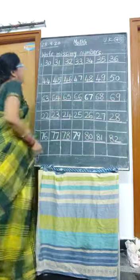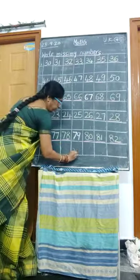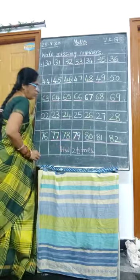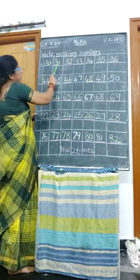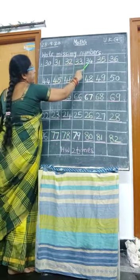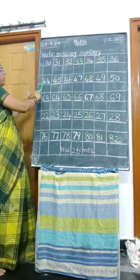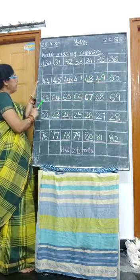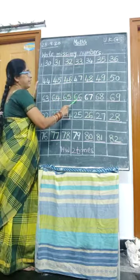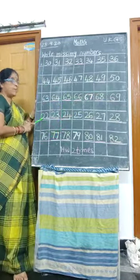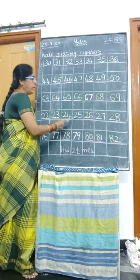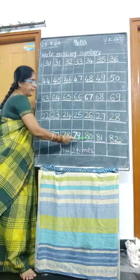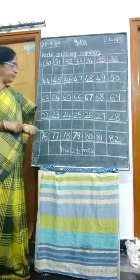Okay children, look at the board and write neatly — two times homework. Again, look at the board. Thirty, thirty after: thirty-one, thirty-two, thirty-three, thirty-four, thirty-five, thirty-six. Next number: forty-four. Forty-four after: forty-five, forty-six, forty-seven, forty-eight, forty-nine, fifty. Here is sixty-three. After sixty-three: sixty-four, sixty-five, sixty-six, sixty-seven, sixty-eight, sixty-nine. What is this number? Twenty-two. After twenty-two: twenty-three, twenty-four, twenty-five, twenty-six, twenty-seven, twenty-eight. After seventy-six: seventy-seven, seventy-eight, seventy-nine, eighty, eighty-one. Okay children, bye.